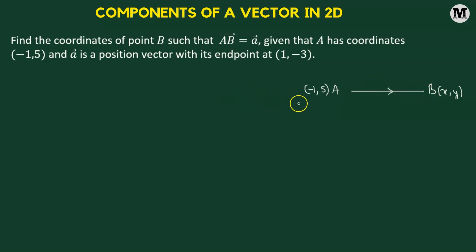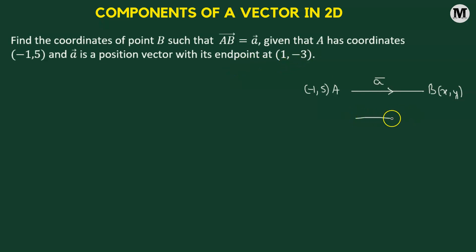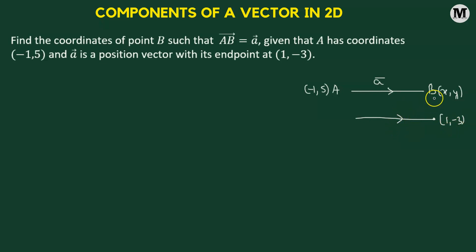It's given that AB vector corresponds to vector A. Vector A is a position vector of another vector whose endpoint is at 1 comma negative 3. So we have another vector whose endpoint has coordinates 1 comma negative 3. Using this information, we need to find the coordinates of endpoint B. So let us begin.